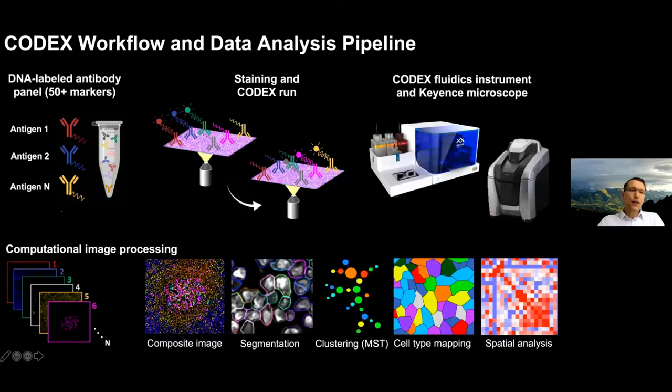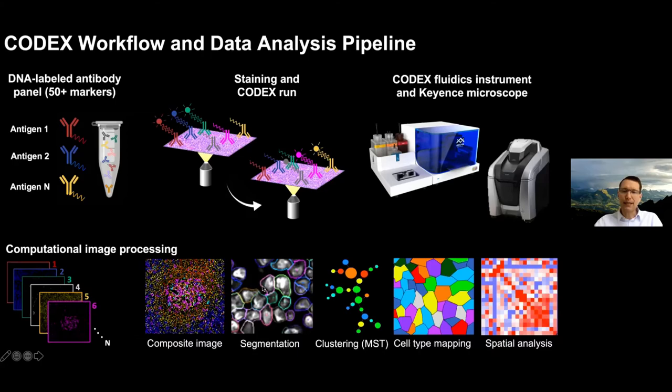This is the CODEX workflow. We start by designing a panel of antibodies against antigens of interest — usually immune markers like CD3, CD5, CD20, CD19, etc., for T and B cells and myeloid cells. We validate each individually and as a panel. We run our samples using a multicycle reaction in the CODEX instrument. From there we computationally process the data: aligning images, stacking them, creating composite images for visualization, and performing segmentation, clustering, etc.